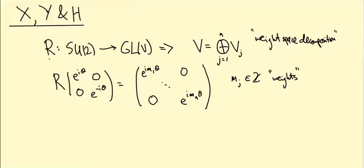Last time we saw that given a representation of SU(2), R from SU(2) to GL(V), where V is a complex vector space, there is a decomposition.